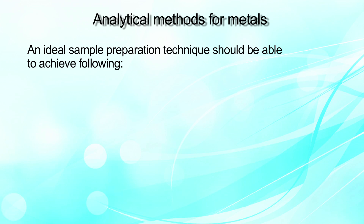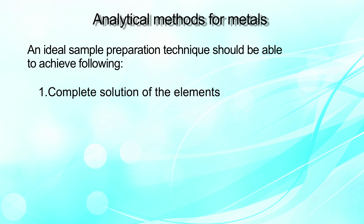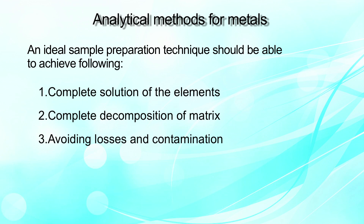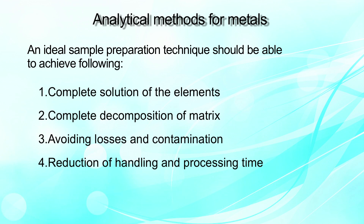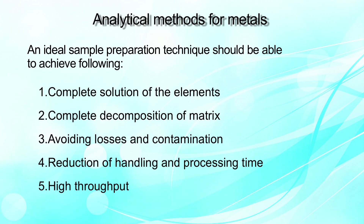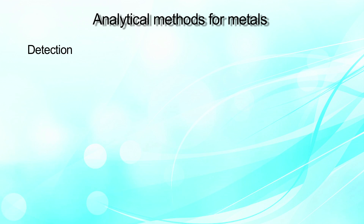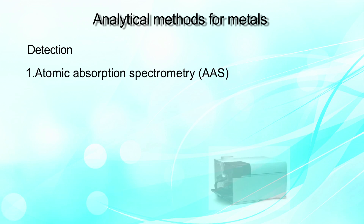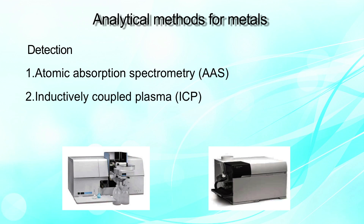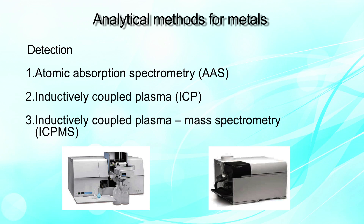An ideal sample preparation technique should achieve complete solution of the elements, complete decomposition of the matrix, avoid losses and contamination from other heavy metals, reduce handling and processing time, and provide a high throughput system. The detection of these heavy metals can be done using high-end instrumentation such as Atomic Absorption Spectrometry (AAS), Inductively Coupled Plasma Optical Emission Spectrometry (ICP-OES), or Inductively Coupled Plasma Mass Spectrometry (ICP-MS).